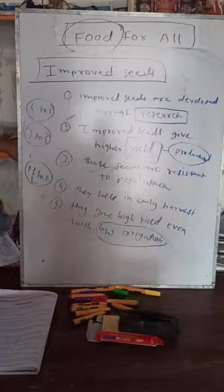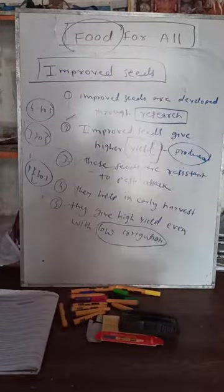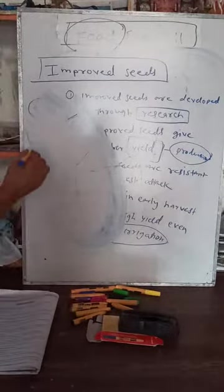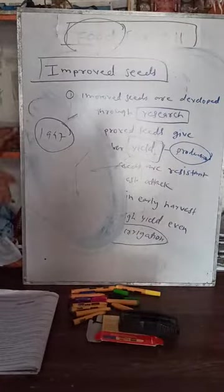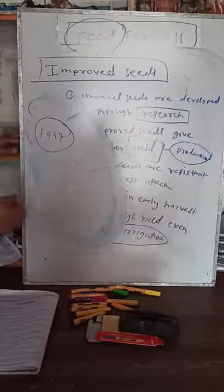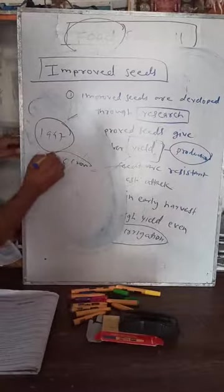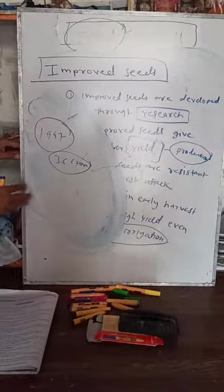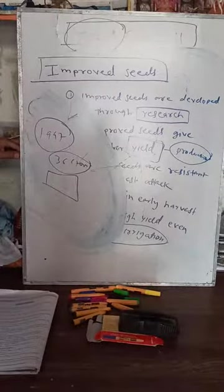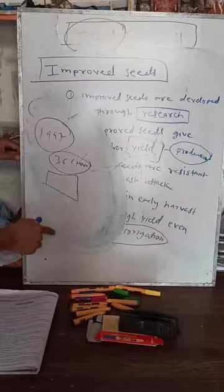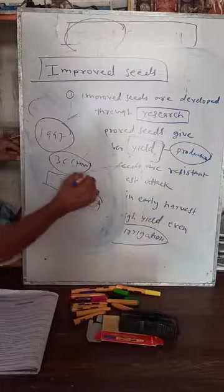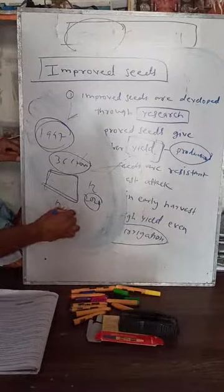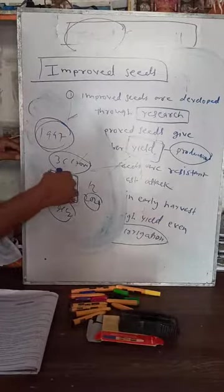When India got freedom in 1947, our population was very less — about 36 crore. At that time, we were not even getting enough food to eat, and we didn't use any improved seeds. The land available was a certain amount for 36 crore people.